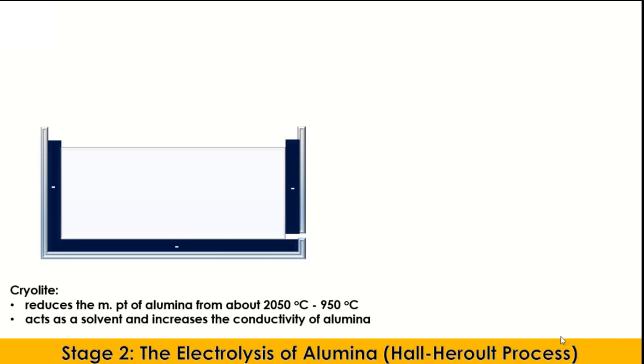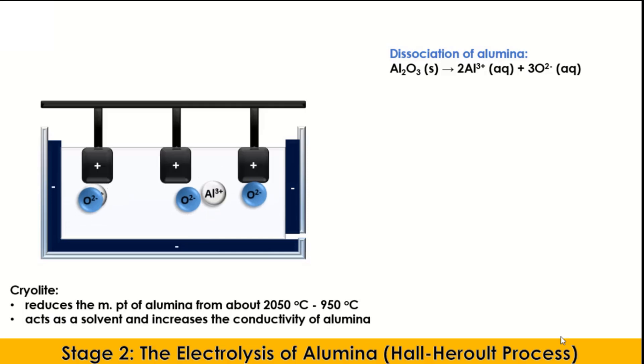Before the electrodes are connected to the power supply, the ions in the molten alumina move randomly after dissociation. On connecting the electrodes, there is a migration of ions based on the electrostatic law of attraction. The oxide anions migrate to the positively charged anode, while the aluminum cations migrate to the negatively charged cathode.